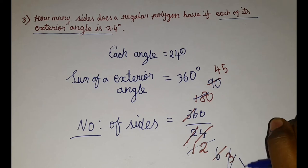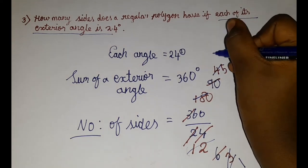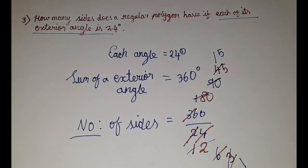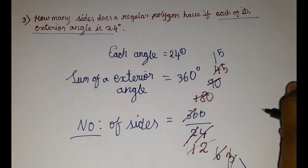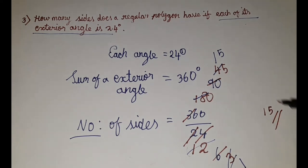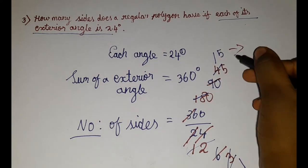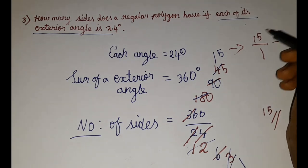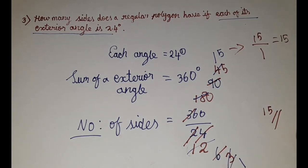So 3 ones are 3. 3 ones are 3, 1 carry. 5 threes are 15. So our answer is 15. Since we got 15 here. So this can be written as 15 by 1. So 15 by 1 means 15. So we can directly write it as 15.